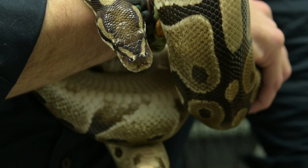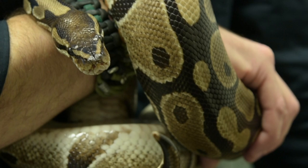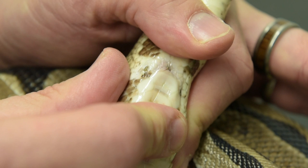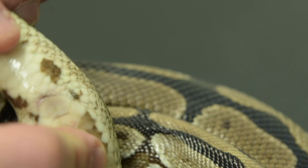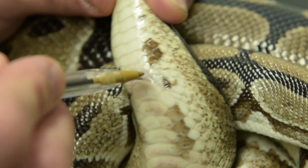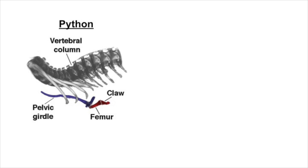But some snakes, like pythons and boas, diverged from the lineage leading to the advanced snakes before legs were completely eliminated. If you look carefully at the tail end of this python, you can see the rudiments of his leg, this little black spot right next to his vent. You see a claw sticking out. And if we x-rayed him, you would see that there's a rudiment of the pelvic girdle and a small femur and a claw.